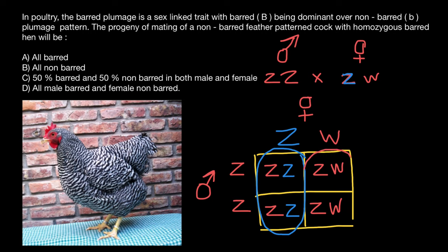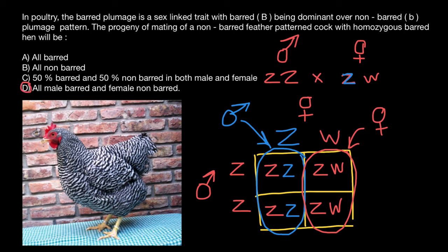And the other 50% are going to be females. These females would have two sex chromosomes just like their mother, but from their father they would inherit only the recessive allele on the Z chromosome, and would be non-barred. So the progeny will be: males — barred, and females — non-barred. As you see, the correct answer is going to be answer D: all males barred, and females non-barred.